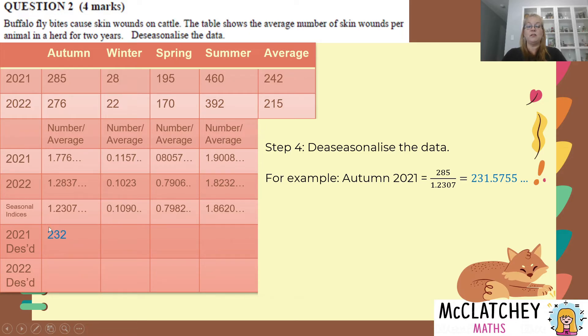So pop 232 and I've rounded that off because you'll notice that the original numbers are all whole numbers. So we actually wouldn't want to have all decimal places because what that's saying is that when you take the seasonal factors of autumn out, the buffalo fly bites would be 232 bites. It wouldn't be 232.2 or 231.575 bites. You wouldn't have part of a bite, you'd have a whole bite. So that's why these numbers are going to be whole numbers.